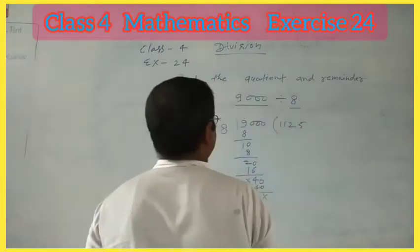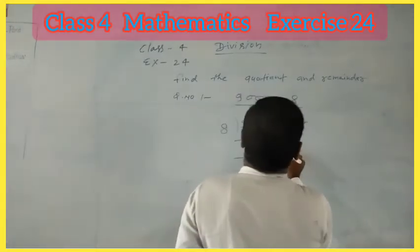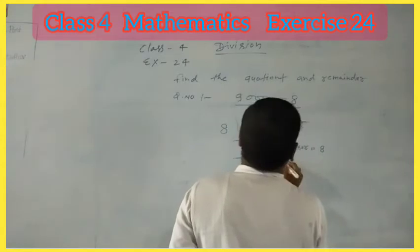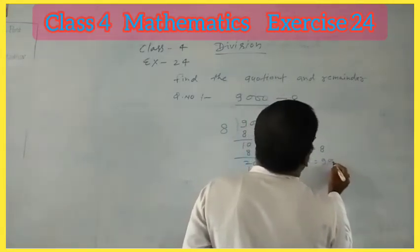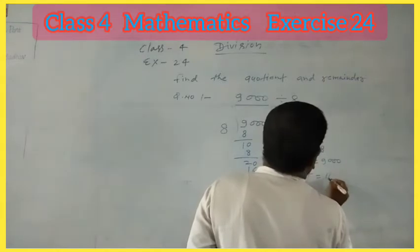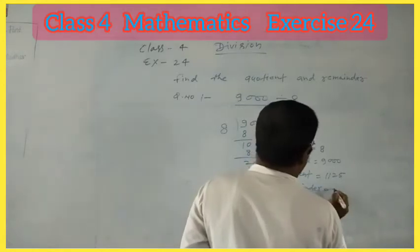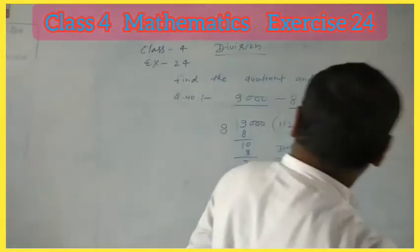Here we write 0. Here we write divisor equal to dividend, which equals 9000. The quotient equals 1,125. I think you all know how to solve division in the following lesson.